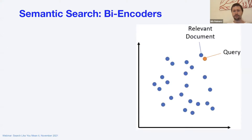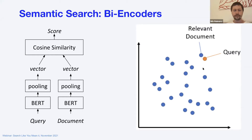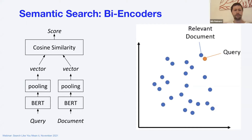So how does it work? The most simple approach is a bi-encoder. The idea is you work with a vector space — every document is a blue dot in that space, grouped by the topic they represent. When the user enters a search query, you also embed it into the vector space and check what is close. You can use pre-trained transformer models like BERT: input your query, input your document, get contextualized word embeddings, apply a pooling operation, and end up with one fixed-size vector. These vectors can then be compared using cosine similarity.